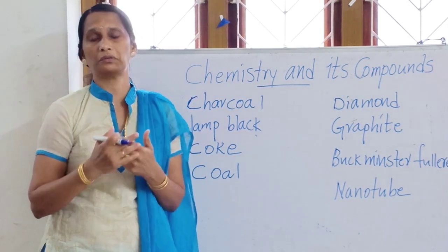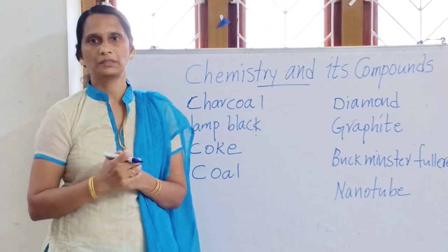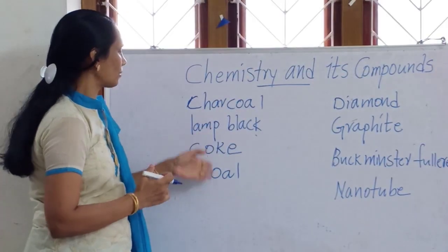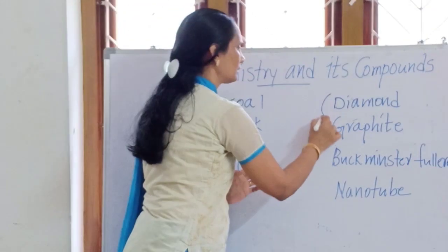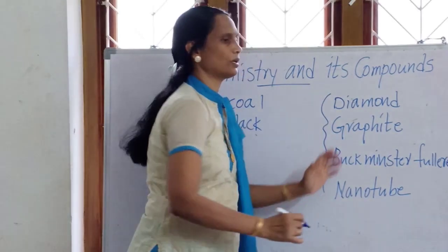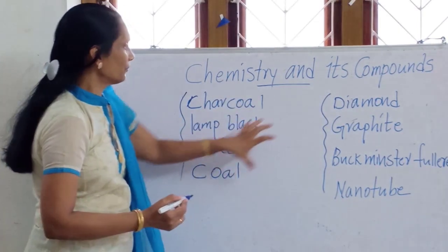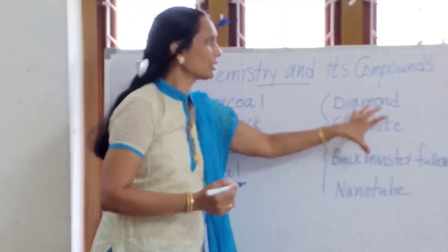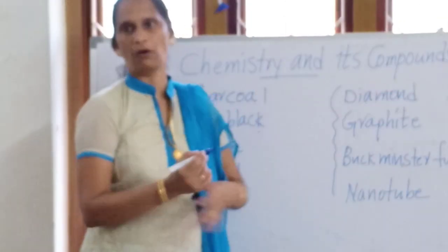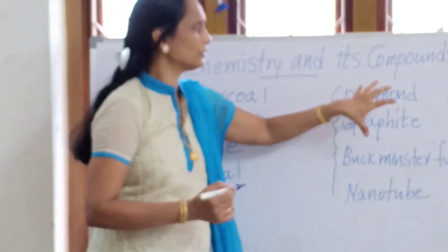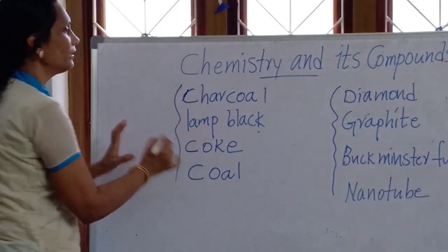Just imagine carbon — a vast number of compounds are formed with carbon. Charcoal and nanotubes are different from diamond and graphite. Diamond and graphite have a crystalline shape, meaning particles are arranged in a three-dimensional crystalline structure. But charcoal and similar forms are non-crystalline.